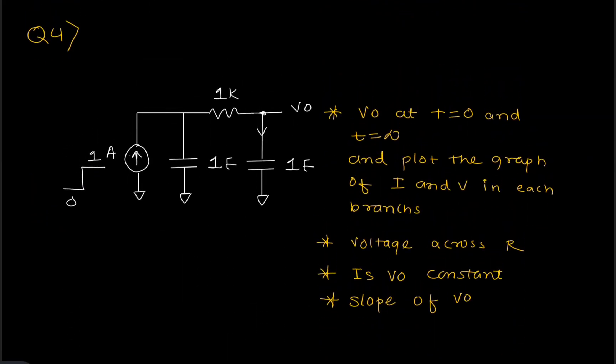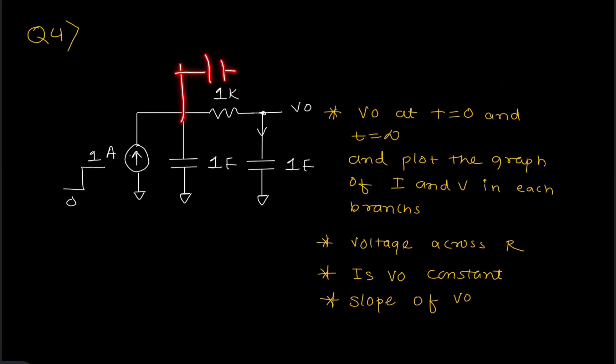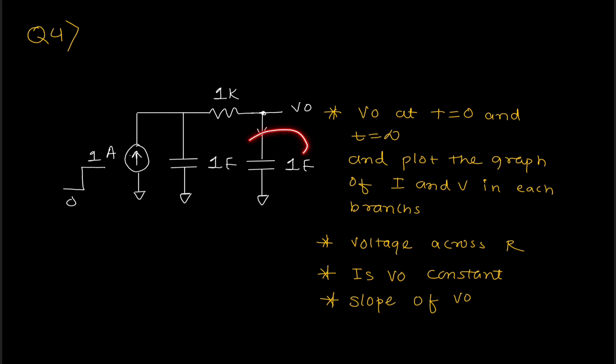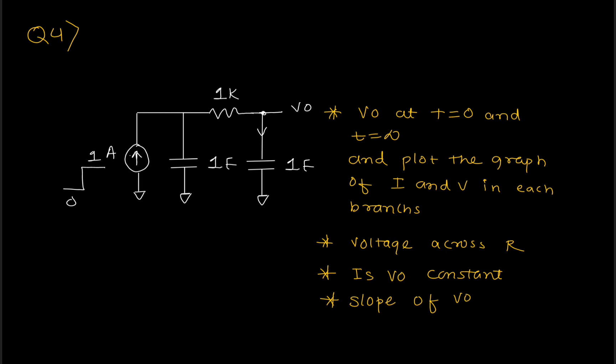For the next question, they removed the parallel capacitor and told me to connect the capacitor in parallel with the current source. They told me to calculate all those things and to plot the slope of the currents and the slope of the voltages. Here they were checking my confidence — they asked me the same question two or three times just to check confidence.